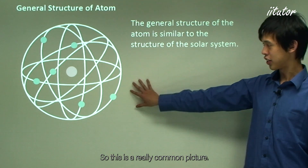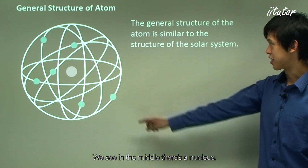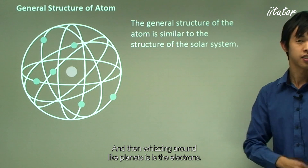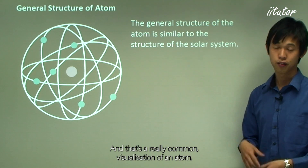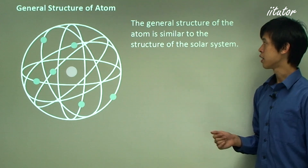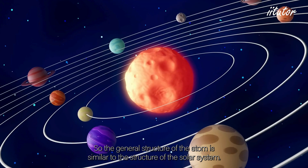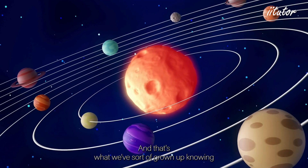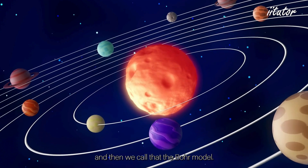This is a really common picture. In the middle there's a nucleus, and then whizzing around like planets are the electrons — that's a really common visualization of an atom. The general structure of the atom is similar to the structure of a solar system, and we call that the Bohr model.